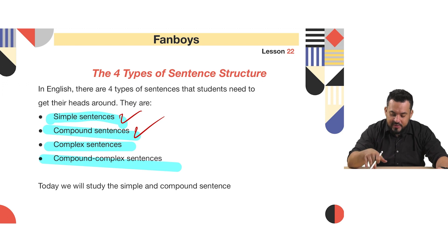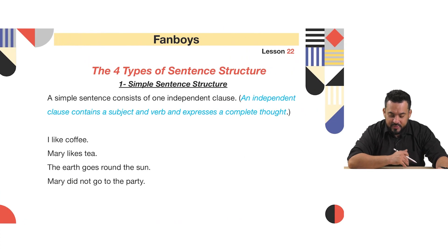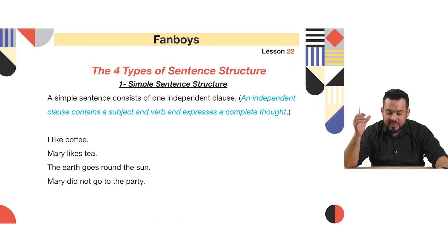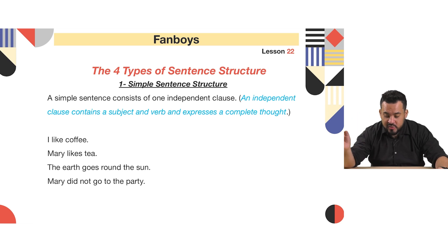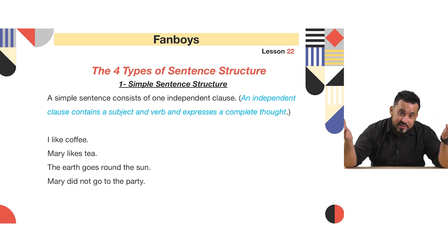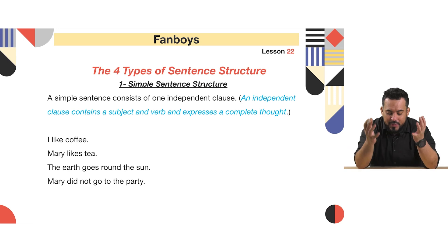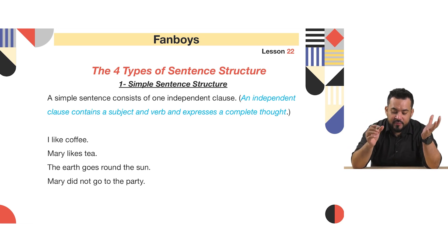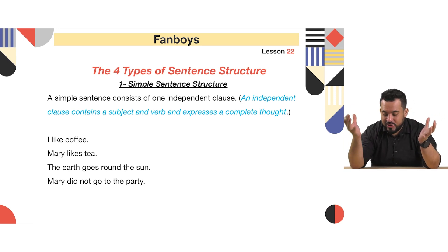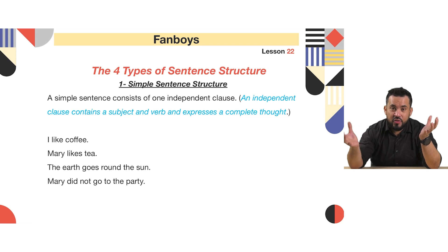What is a simple sentence? A simple sentence consists of one independent clause. An independent clause contains a subject and a verb that expresses or completes a thought. So it's basically a subject and a predicate — one action. That's it. It's a simple sentence.